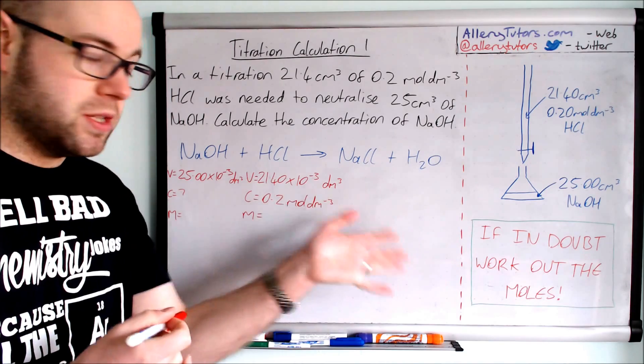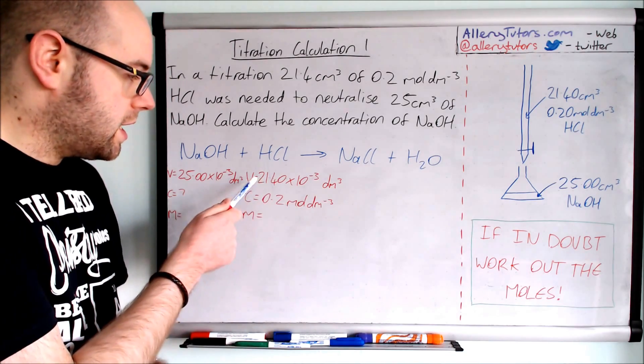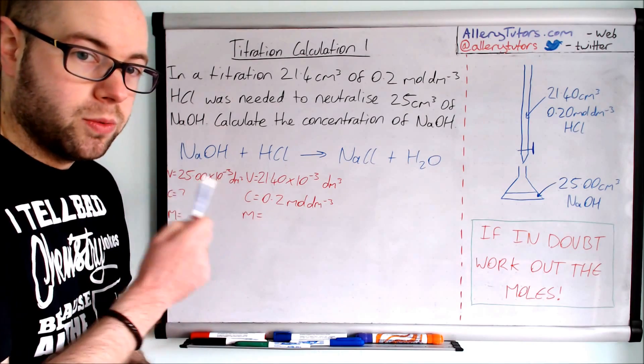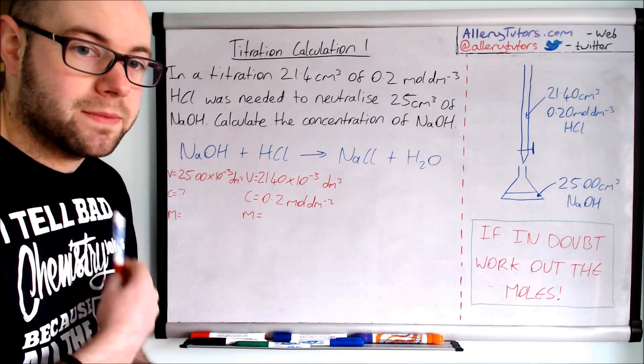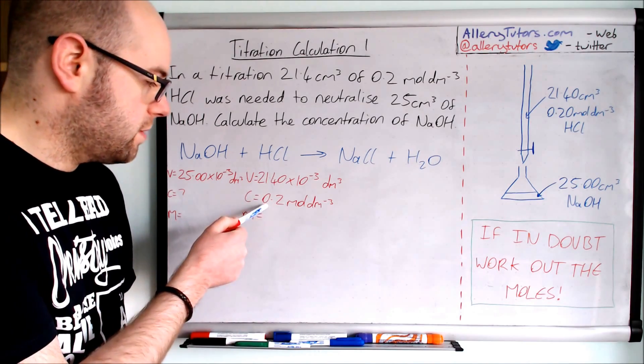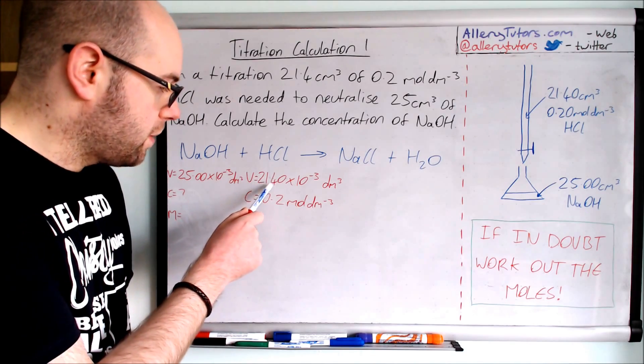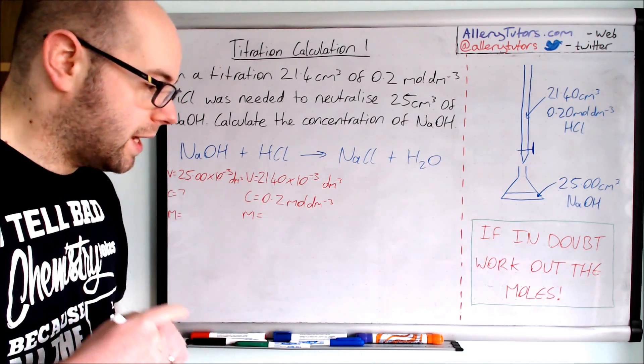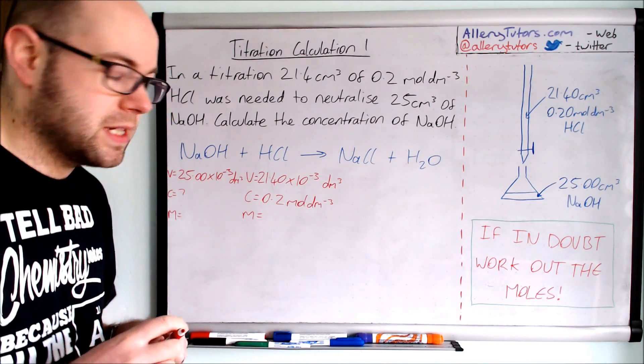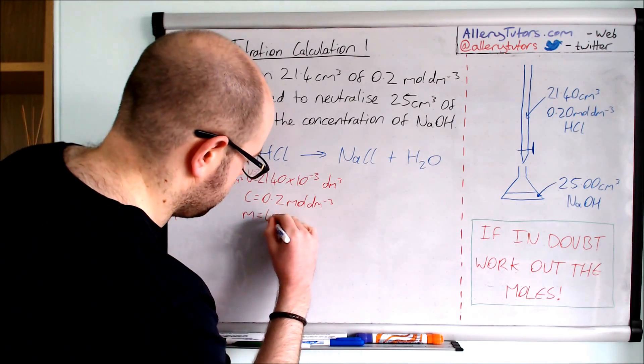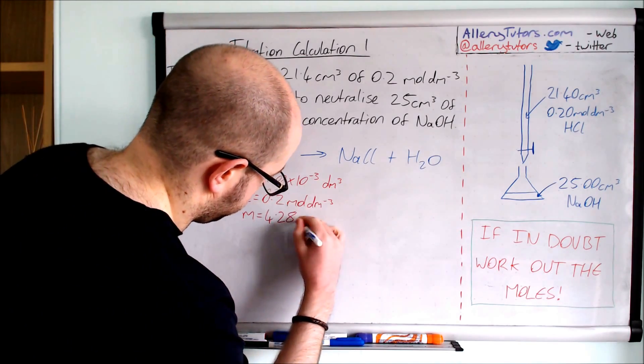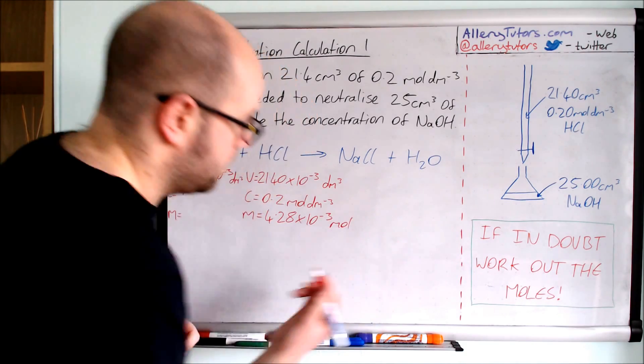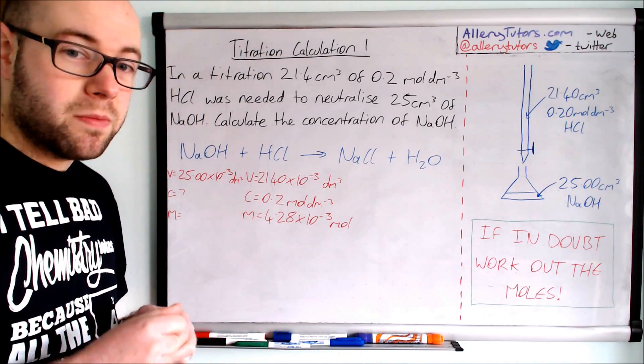Now the first thing we need to work out is the moles. We've got volume, concentration, and moles. To work out the moles, we do concentration times by volume. So we've got 0.2 multiplied by 21.40 times by 10 to the minus 3. If you put that into your calculator, we should get 4.28 times by 10 to the minus 3 moles. So now we know the number of moles of acid.